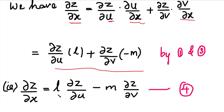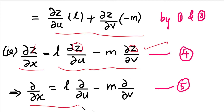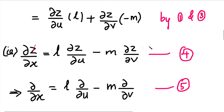Since z is a function of u and v, the function z is common on both sides. On the right side we have ∂z/∂u and ∂z/∂v. So we can write the operator: ∂/∂x equals l times ∂/∂u minus m times ∂/∂v. This is equation number 4. Similarly for y, we get equation number 5: ∂/∂y equals m times ∂/∂u plus l times ∂/∂v.